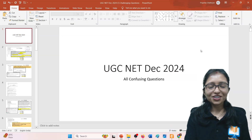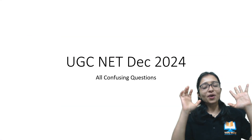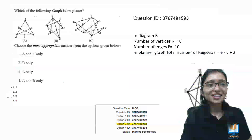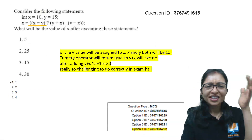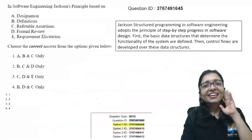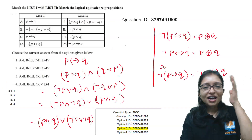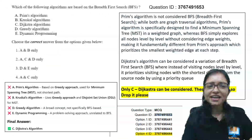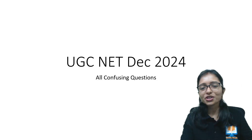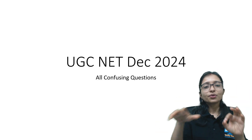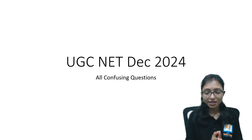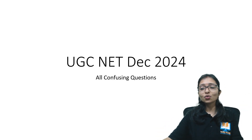After checking the answer key, everyone is surprised. Most students are surprised — is this the correct answer? What did I do? I was expecting more than 200, but why is my score low? This confusion is going on in your mind, and it's not only for you — it's happening for the maximum number of students who were expecting more than 200.